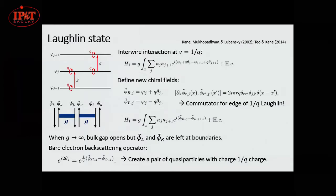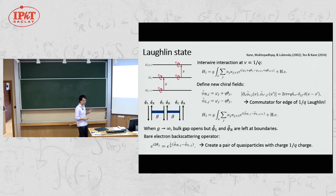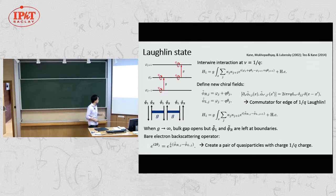We can also examine what the quasi-particle is from this coupled wire model. It is described by the original electron backscattering operator. This tells us that you can create a pair of quasi-particles, each carrying 1/q charge compared with the original electron — we definitively find fractional charge in the coupled wire model.